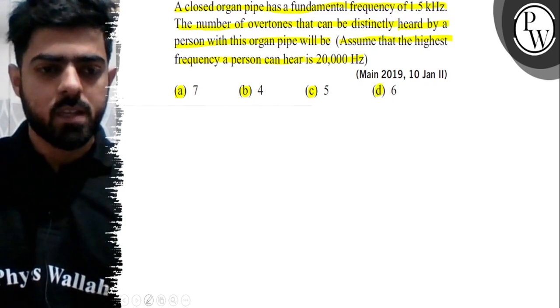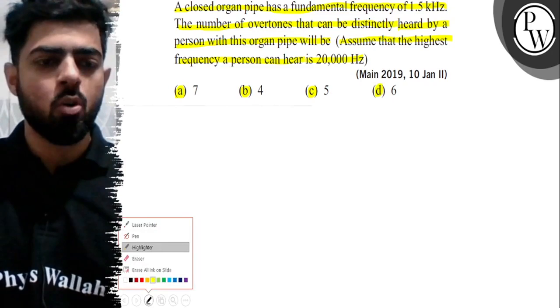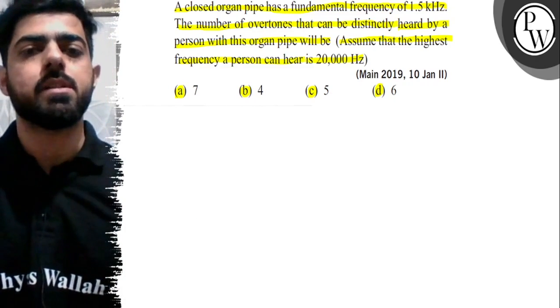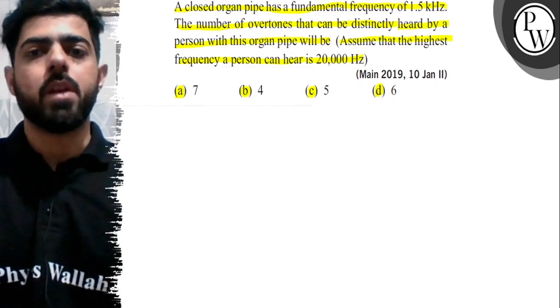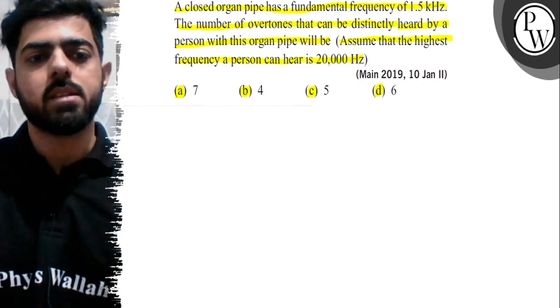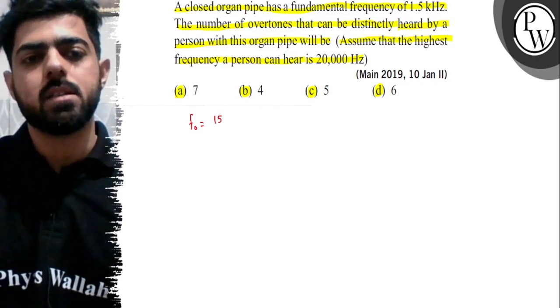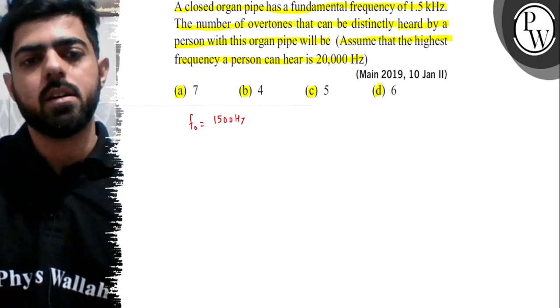This is the case of an organ pipe closed at one end. The frequency given is the fundamental frequency, which we'll denote as F₀. So F₀ is 1.5 kHz, that is 1500 Hz.